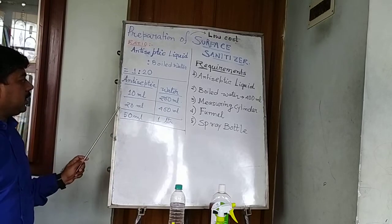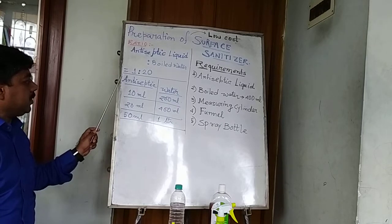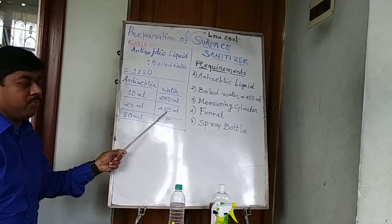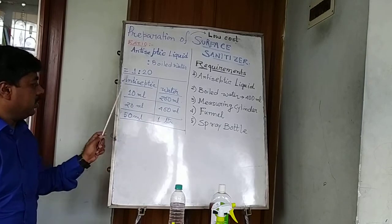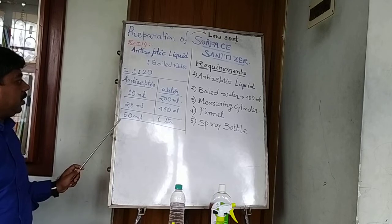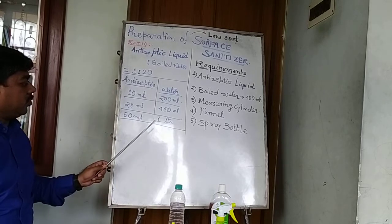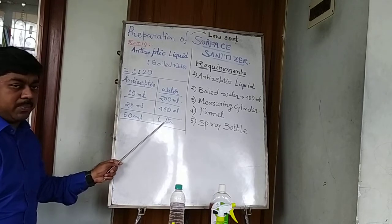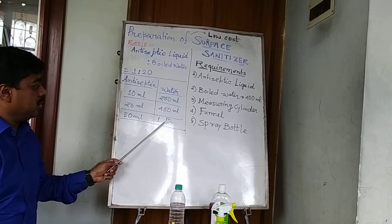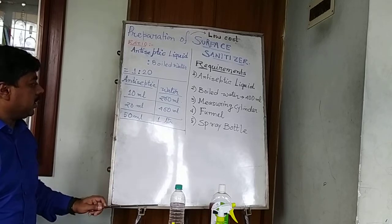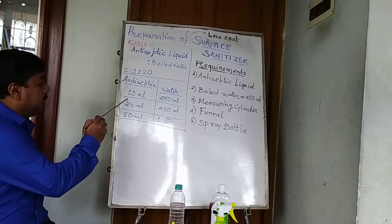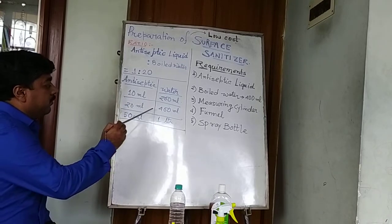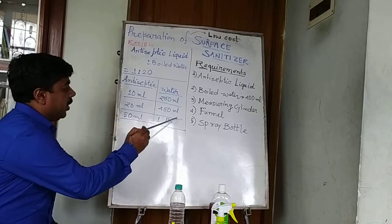For 20 ml of antiseptic liquid, we need 400 ml of boiled water. For 50 ml of antiseptic liquid, we can make one liter of surface sanitizer. I am taking the average — that is 20 ml of antiseptic liquid in 400 ml of water.